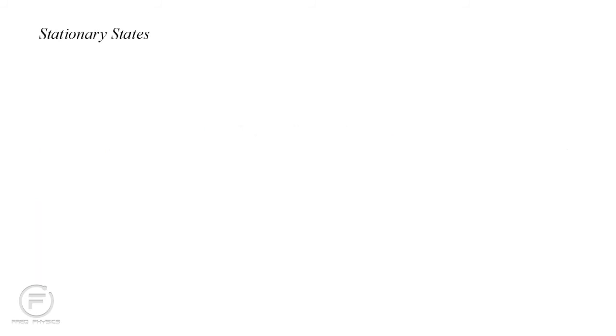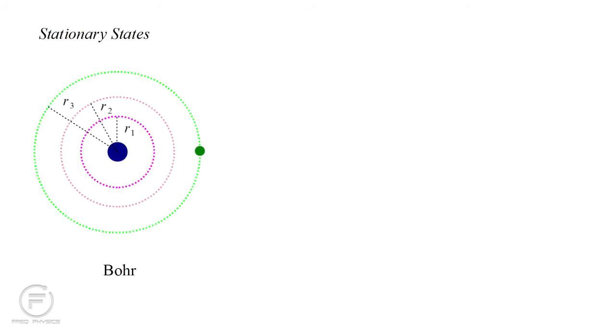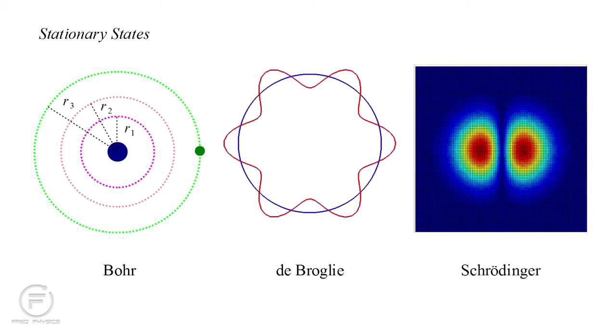Recall from Video 4C how Bohr proposed the concept of stationary orbits to explain why atoms have discrete energy levels and don't suffer radiation collapse. De Broglie proposed that these were orbits in which fit a whole number of electron waves. The stationary state concept naturally arises in the solution of the Schrödinger equation without any additional assumptions. We can find certain solutions for which the wave function intensity, the probability distribution for finding the electron at a given place in space, doesn't change with time. As we discussed in Part A, these are the solutions where the electron has a well-defined energy.